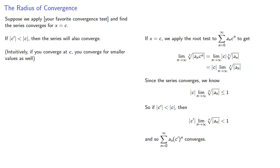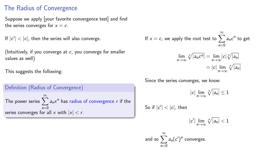And intuitively, this means that if you converge at a point, you converge for smaller values as well. And this suggests the following definition. The power series has a radius of convergence r if the series converges for all x where the absolute value of x is strictly less than r. To understand why it's called a radius, you should take complex analysis.